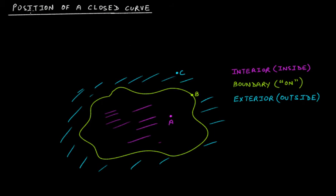So this is inside, this is on the boundary, and this whole region is outside. That's what the position of any point can tell us — point C is outside or exterior to this curve, point B is on the boundary, and point A is inside of the curve.